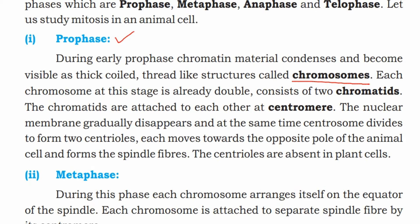Each chromosome at this stage is already double, consisting of two chromatids. Each chromosome is therefore made up of two chromatids at this stage.